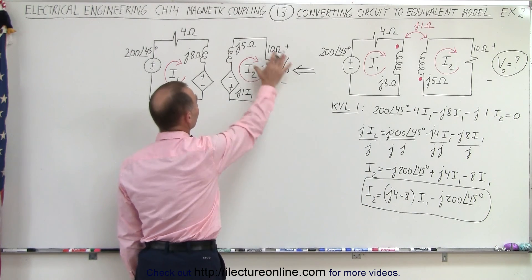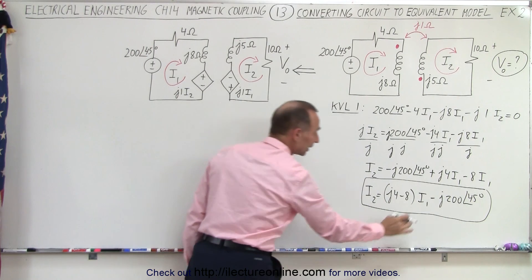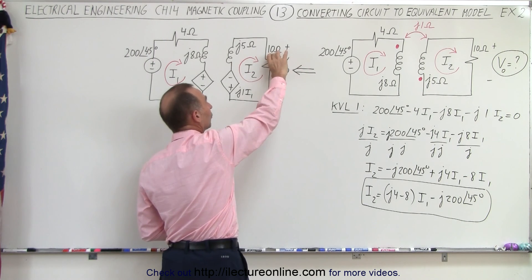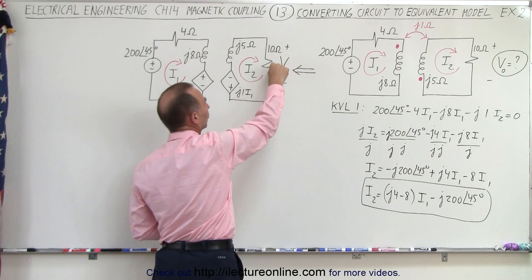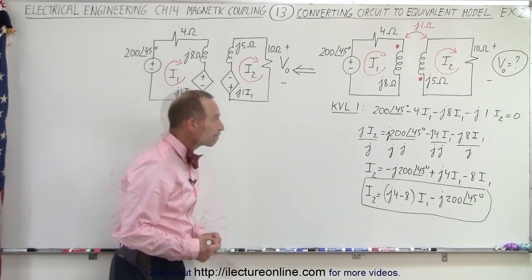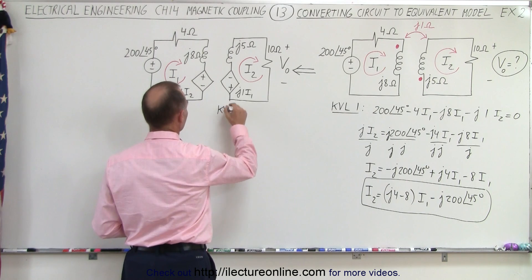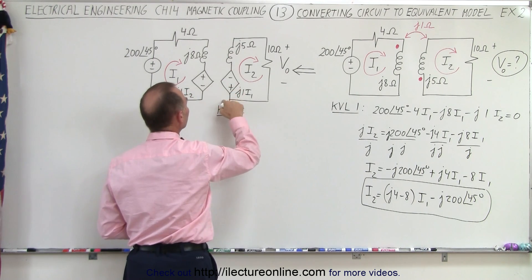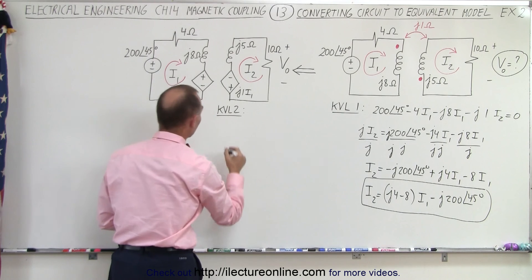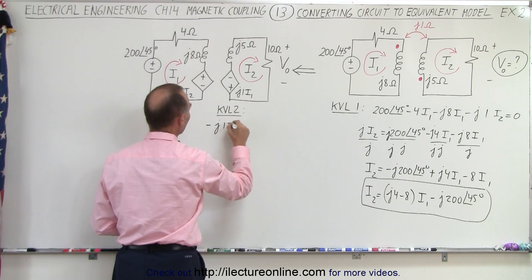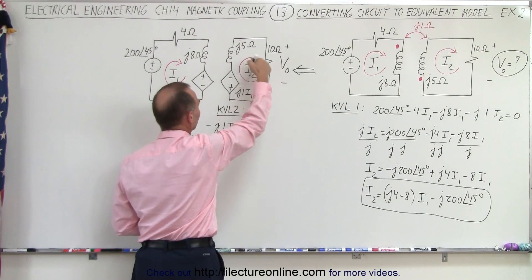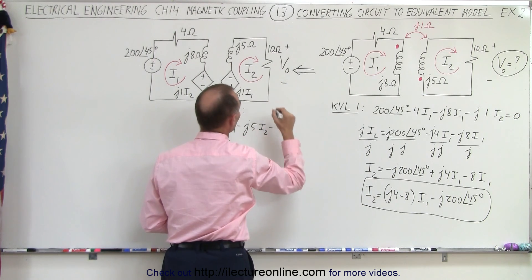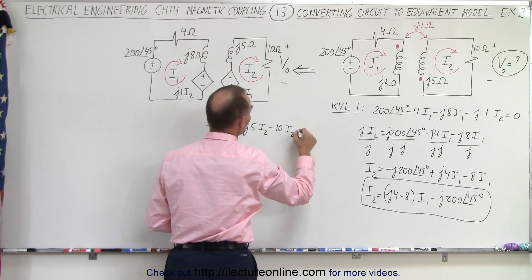Now I have my first equation with I2 in terms of I1. All I have to do is get another equation for the second loop, solve that for I1, plug it in, and solve for I2. Once I have I2, the voltage across the resistor is simply resistance times current. For KVL loop two, adding up all the voltages: starting here we have a voltage drop of minus J1·I1, then a voltage drop of minus J5·I2, and a voltage drop of minus 10·I2 — the 10 ohm resistance — and all that adds up to zero.